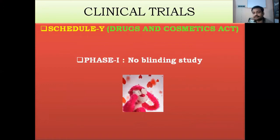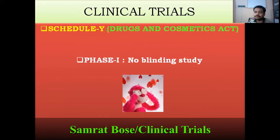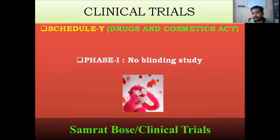Clinical trial has four phases: Phase 1, Phase 2, Phase 3, and Phase 4. There is also a Phase 0, which will be discussed in another video — it is an optional phase, not mandatory. In this video, I will discuss only Phase 1 through Phase 4.